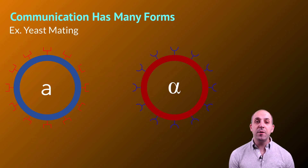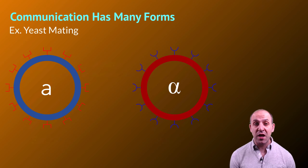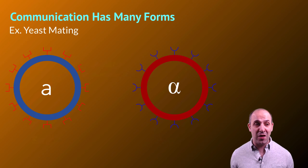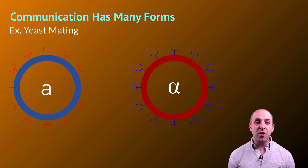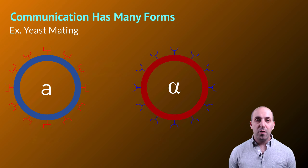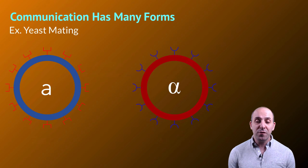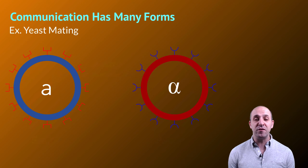It's important to understand that communication has many different forms. We're going to look at one example from the microscopic world to see how that framework can translate across the biological system. The example is mating in yeast. Yeast are a single-celled fungus that can reproduce both asexually and sexually. The sexually reproductive system in yeast requires two different strains of yeast cells: what we call the A strain and the alpha strain.